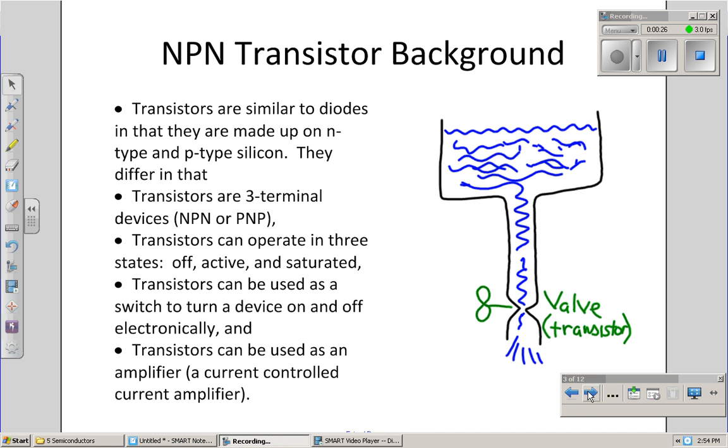Transistors are very similar to diodes. They're also made up of silicon, made up of N and P-type material. They differ, however, in that there are three terminal devices. As such, there are two types of transistors, NPN and PNP.